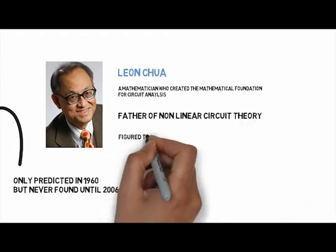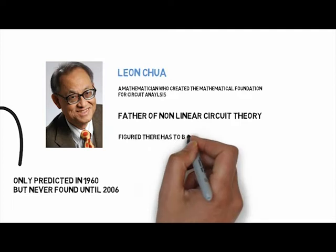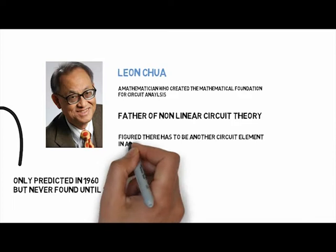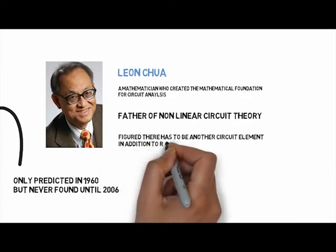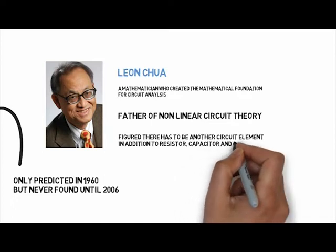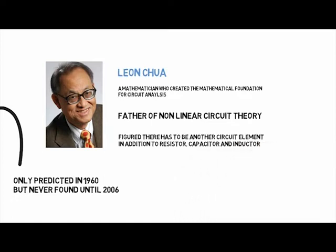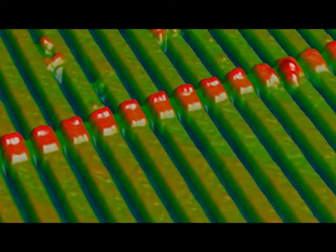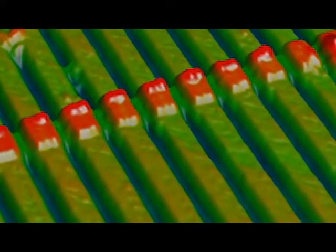In his nonlinear circuit theory there was something missing. If you think about the four fundamental quantities in circuits — the voltage, the charge, the current, and the flux — there are six ways of relating those four things, but there are only three fundamental passive devices. So what Leon postulated, based essentially on symmetry and beauty, was that there should be a fourth fundamental circuit element.